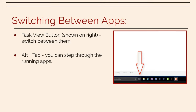You can also switch between apps two ways: you can click on the apps on the taskbar, or hit Alt+Tab to step through the running apps.